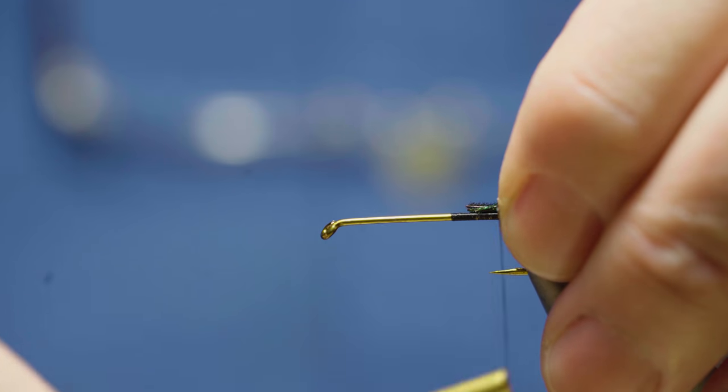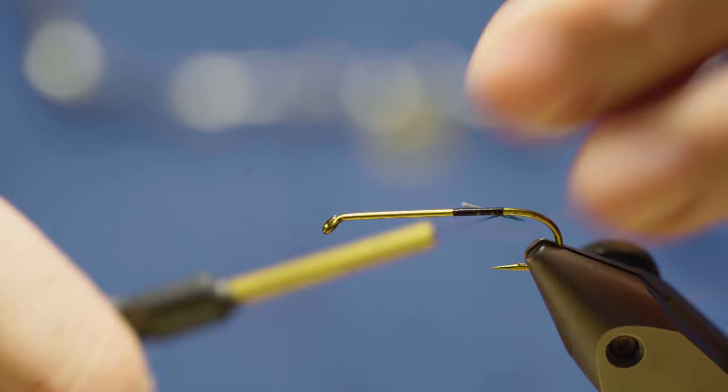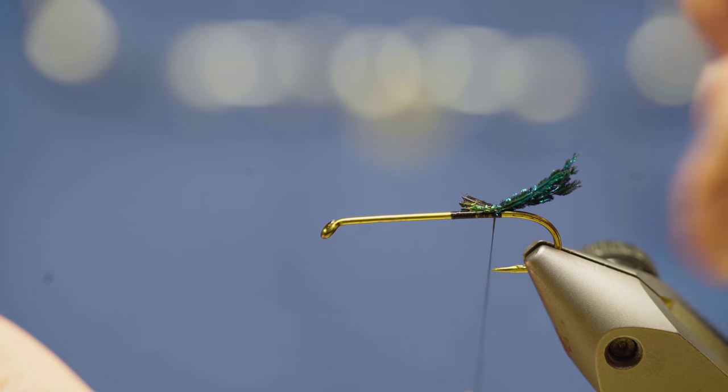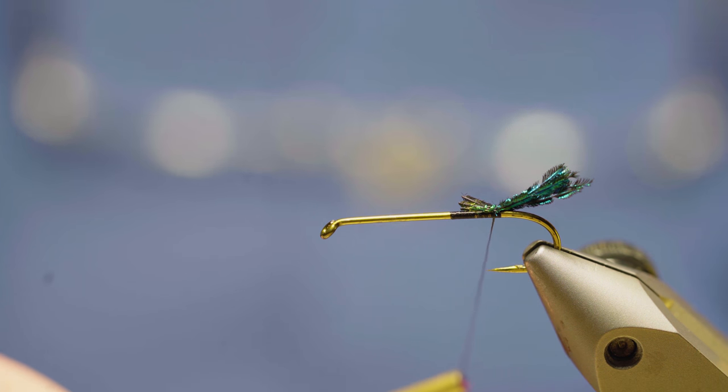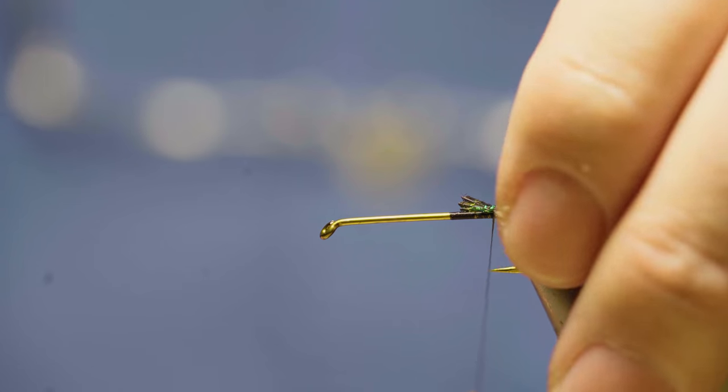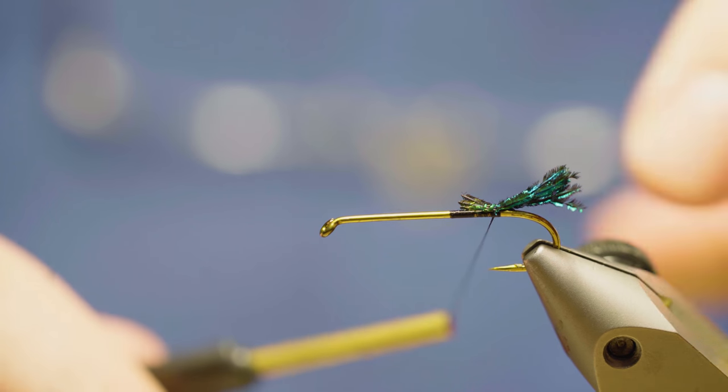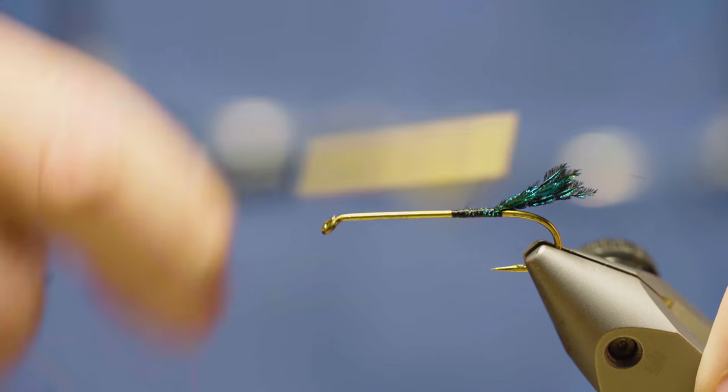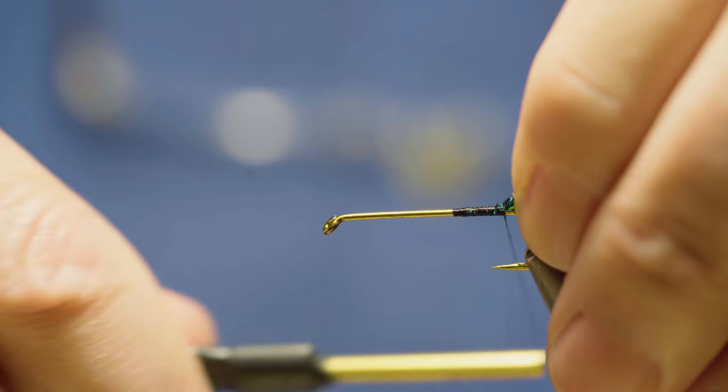Now there's a lot of ways to skin a cat as I always say and you don't necessarily have to do it this way. You can take peacock sword from two different sides of a pair of feathers and tie them in so they're all even. Well it's a big pain in the hoo-ha. So what we're going to do here is make it simple and get our tail in. This is a fishing fly not a presentation fly.